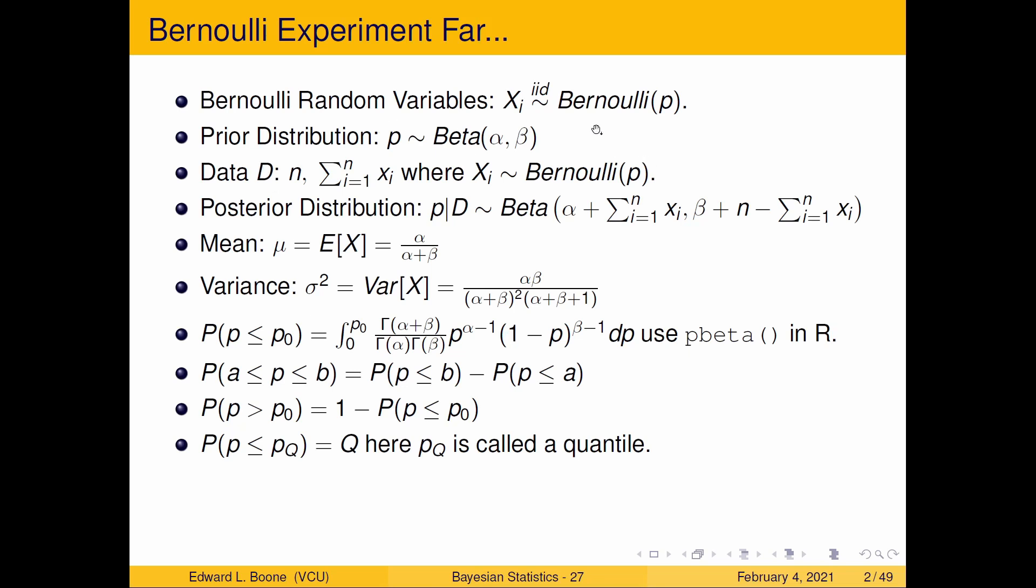We have Bernoulli random variables that means there's zero ones. We're going to have a prior distribution which is going to be beta with α and β as its parameters. We're going to get some data which is the number of observations that we collect and the sum of the xi which is the number of successes is going to be our data. Our posterior distribution is this and we'll be using this later. We have a mean and a variance.